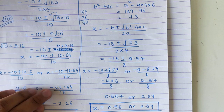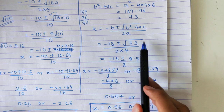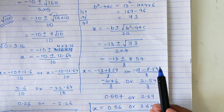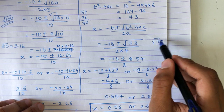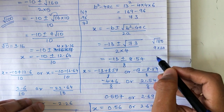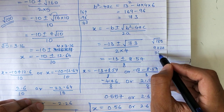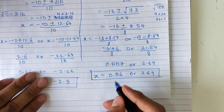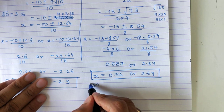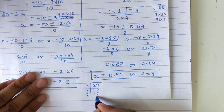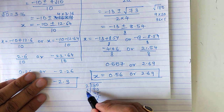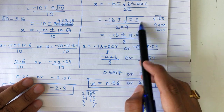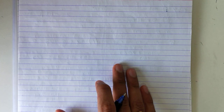All the other sums in question 3 are exactly the same — follow these same steps. If the number under the root is greater than 100, first reduce it. For example if the number is 180, write it as 9 into 20 so 3 comes out, or as 36 into 5 so 6 comes out. Split it so a perfect square factor comes out. You can also do prime factorization to find pairs.